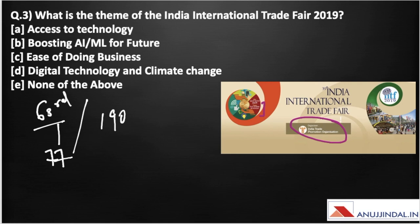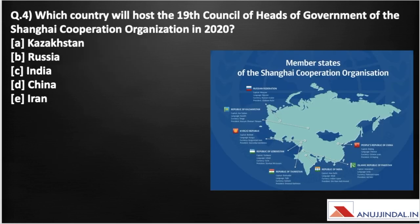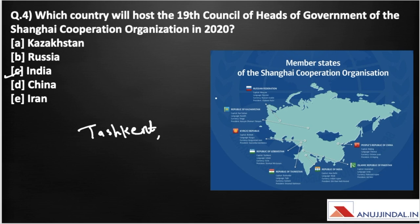Which country will host the 19th Council of Heads of Government of the Shanghai Cooperation Organization in 2020? The answer is India. The 18th Council was held in Tashkent, Uzbekistan. You can take a screenshot of the picture showing SCO members. My question for you is: who is the current chair or head of SCO?